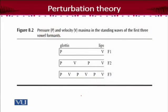Looking at the figure, this is the tube: the closed end is where the pressure is maximum, and the open end at the lips is where the velocity is maximum. F1 takes a particular shape. F2 can be described similarly — the pressure is here, and then the velocity is here — and the same concept continues for subsequent frequencies.